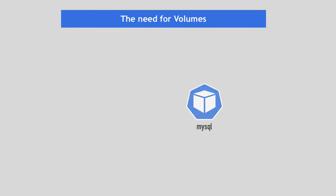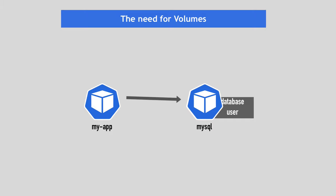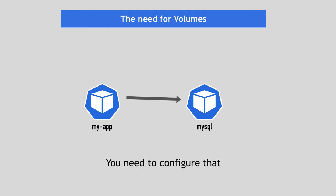Consider a case where you have a MySQL database pod which your application uses — data gets added and updated in the database. Maybe you create a new database with a new user, etc. By default, when you restart the pod, all those changes will be gone because Kubernetes doesn't give you data persistence out of the box.